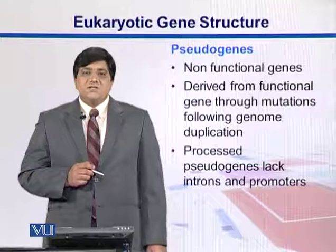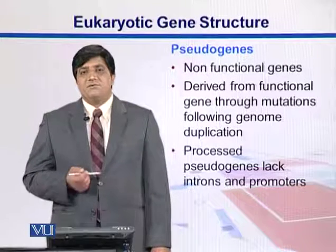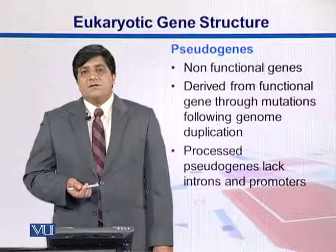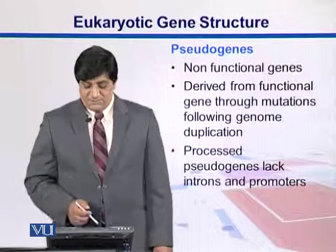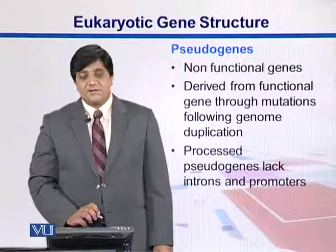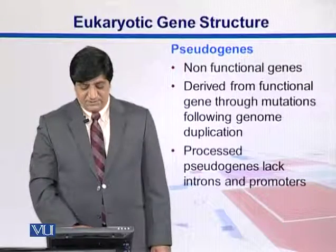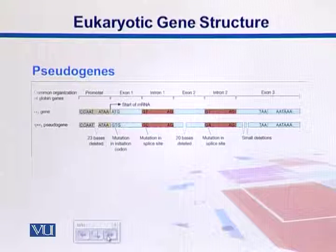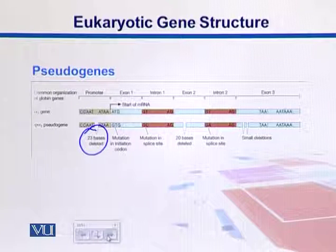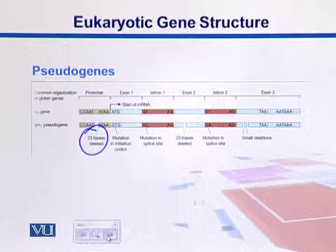Pseudogenes are non-functional genes. Sometimes there are mutations in genes, and if those mutations occur in important regions, the gene's function gets knocked out — we call those genes pseudogenes. There is a category called processed pseudogenes, which lack introns and promoters as well. Here is a diagram in which we see a normal gene alongside a pseudogene. At the 5 prime end, 23 bases have been deleted, including the initiation codon, with deletions from the promoter region — these deletions are lethal.